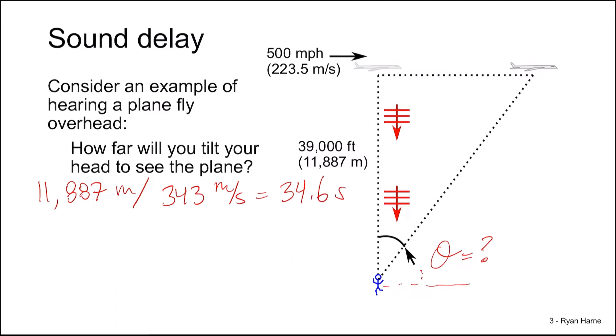So, how far will the plane travel in 34.6 seconds? Well, it's going to travel 223.5 meters per second, multiplied by 34.6 seconds. And this is around 7,733 meters, or in other words, 25,400 feet.